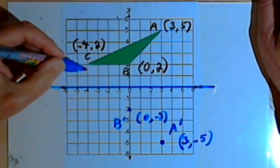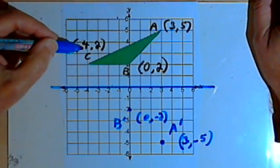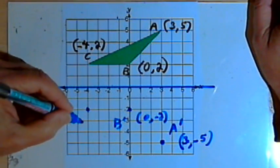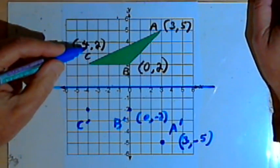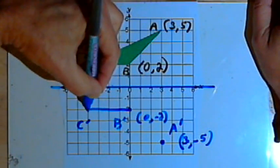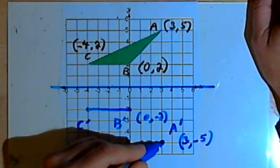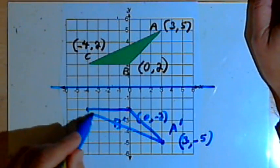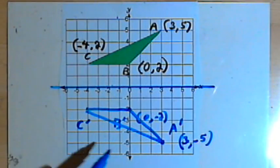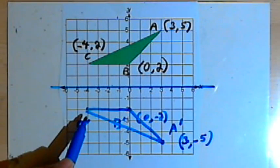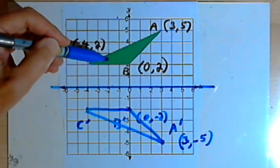And in the same way, I'll take point C, which is at negative 4, 2, and I'll place C prime at negative 4, negative 2. And now all I need to do is connect my three points, and what I've got is the reflected image, A prime, B prime, C prime, of the original image.